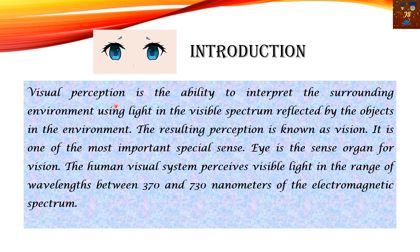Visual perception is the ability to interpret the surrounding environment using light in the visible spectrum reflected by objects in the environment. Light falls on objects, our eye captures that reflection, and through the visual pathway it helps us see the object. The eye is a sense organ for vision — without the eye we cannot see.